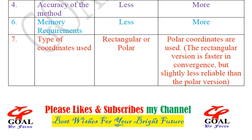Next point is type of coordinates used. In case of GS method, coordinates used are rectangular or polar. In case of Newton-Raphson method, polar coordinates are used. The rectangular version is faster in convergence, but slightly less reliable than polar version. That's why in case of Newton-Raphson method, polar coordinates are used.